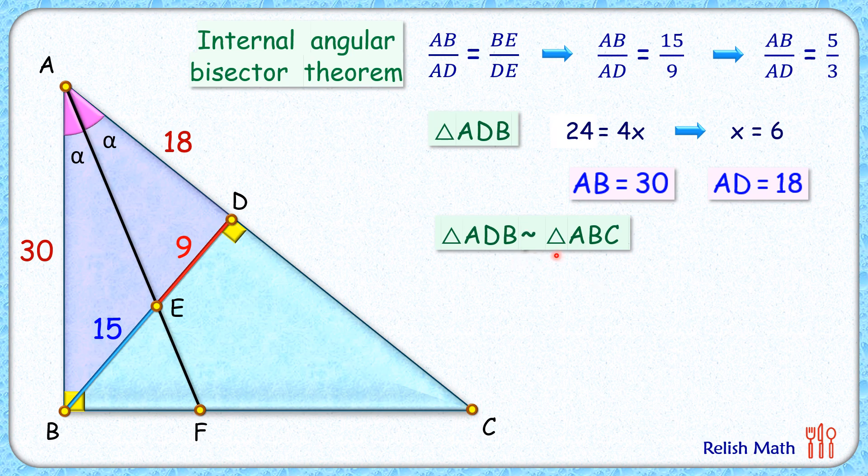As the triangles are similar, the ratio of corresponding sides will be equal. So we can take AD upon BD equals AB upon BC. Putting the values here, we get 18 upon 24 equals 30 upon BC. Solving it, we get the value of BC as 40 centimeters.